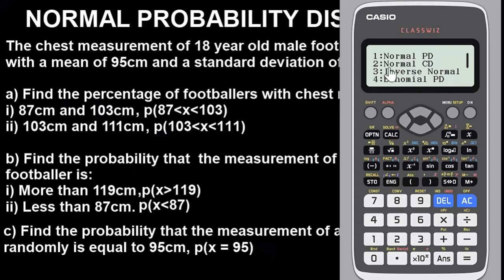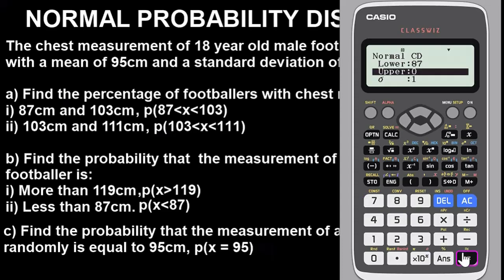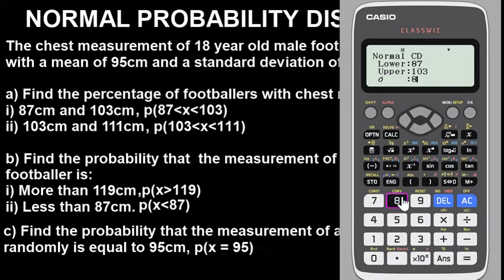Now in the distribution menu we have Normal PD and Normal CD. For the A and B parts of this question I'm going to use Normal CD. Press to select Normal CD. When you get here, you will be required to enter the lower value, upper value, standard deviation, and mean. For Part A(i), we need to find the percentage of footballers with chest measurement between 87 cm and 103 cm. Enter the lower value as 87, then the upper value as 103. Our standard deviation is 8, so enter 8.